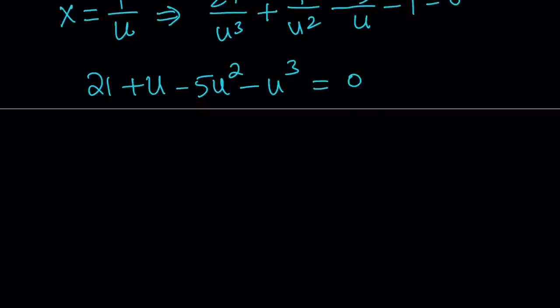We can go ahead and multiply both sides by negative 1. That's going to give us u cubed plus 5u squared minus u minus 21 equals 0. And guess what? This is a monic polynomial. Yay!